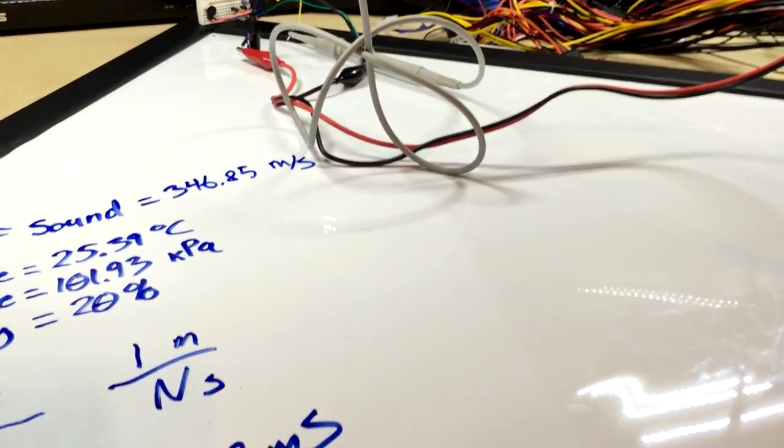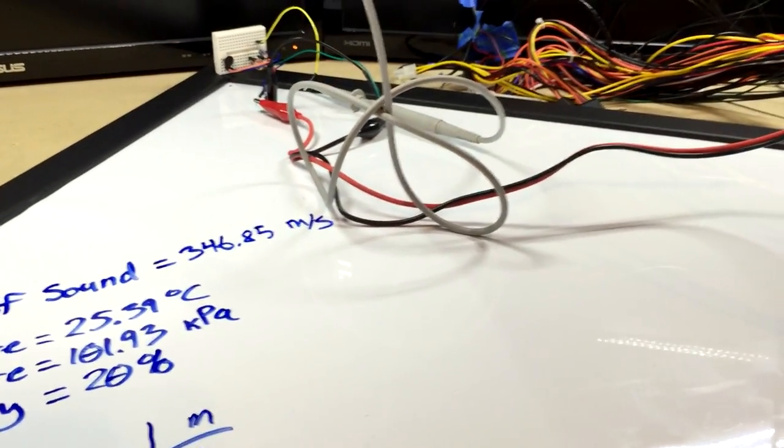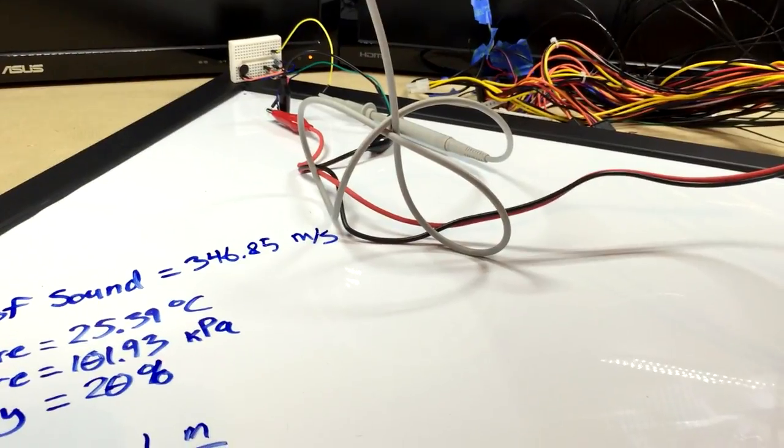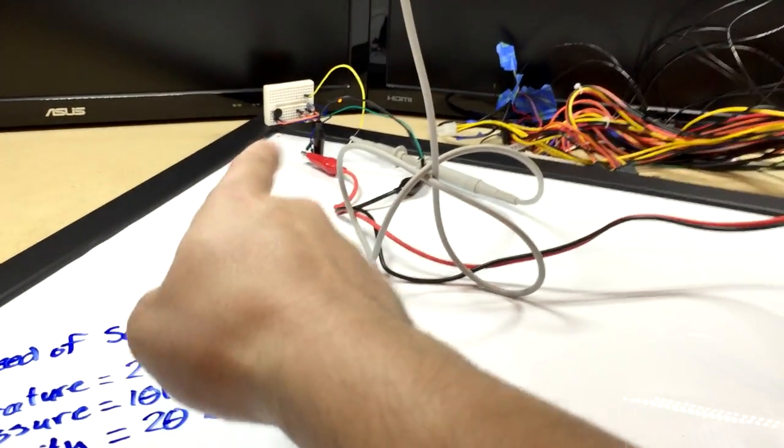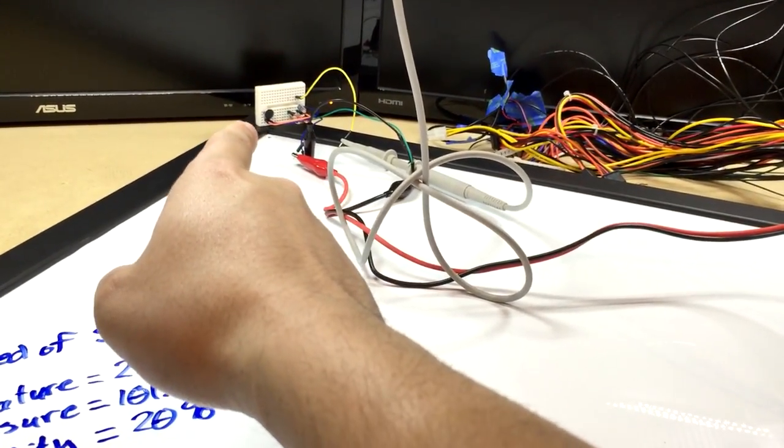This is an old whiteboard I have that started to crinkle. I'm glad I didn't throw it away because I found a good use for it today. Diagonally, it is exactly one meter across.